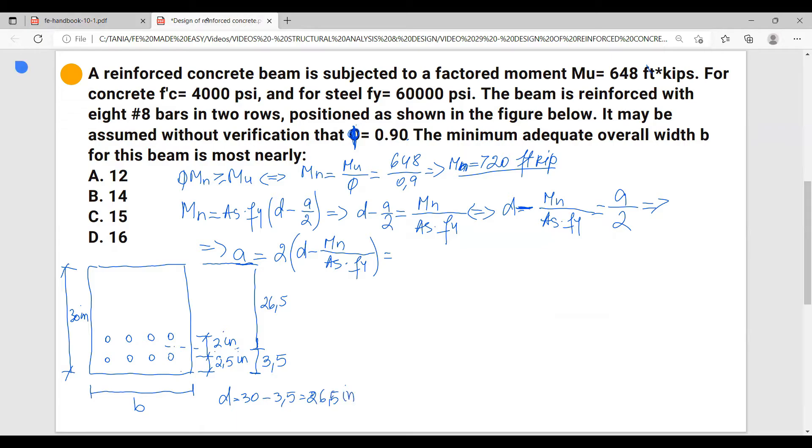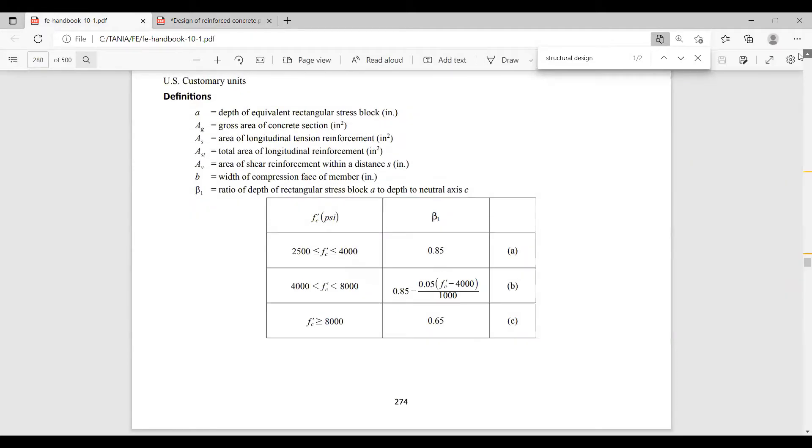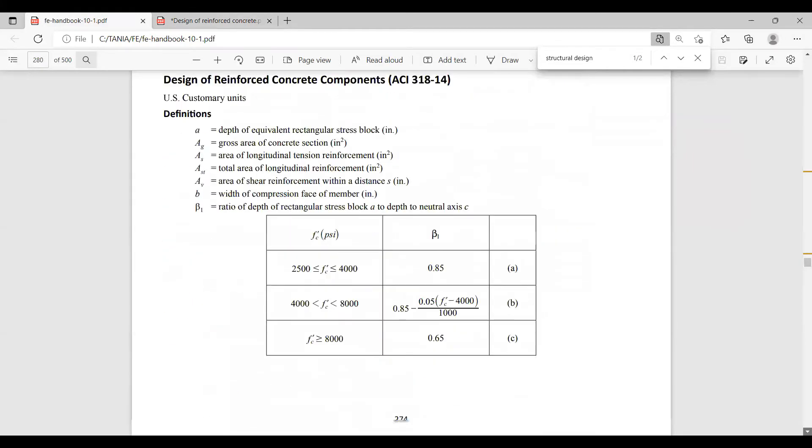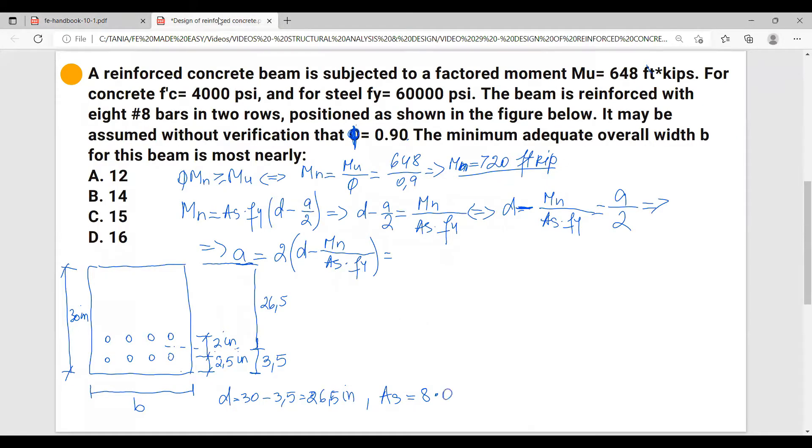And now everything else we know. We also have the As. We just quickly calculated, we have eight #8 bars. So to have eight #8 bars, let's go back to the FE handbook. I think the areas are provided here. There you go. So we have #8 bars and the area for one is 0.79, so we're going to do 8 times 0.79, and I get 6.32 inches squared.